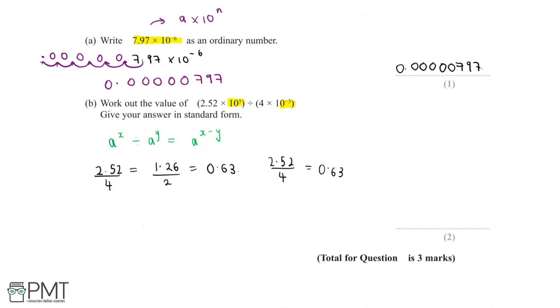Then we have 10^5 ÷ 10^-3. Using the index law above, we can say this is the same as 10^(5 - (-3)), which is the same as 10^(5 + 3), which equals 10^8.